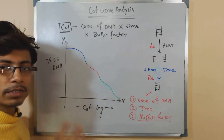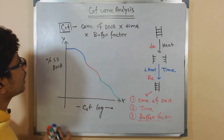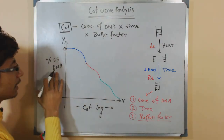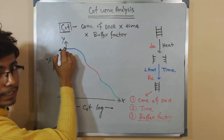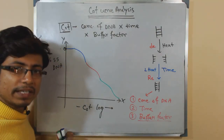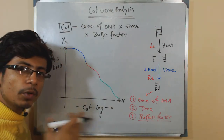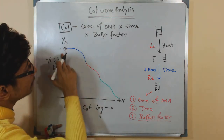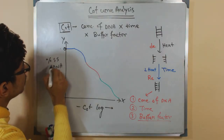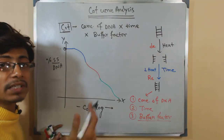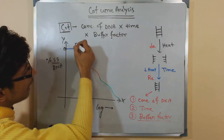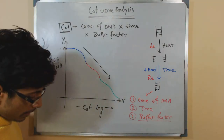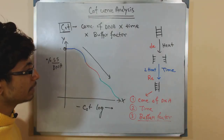All of the DNA starts from a point where it is completely single-stranded, so the percentage of single-stranded DNA is very high. As we go on with time, those single-stranded DNAs start to re-anneal with each other — the percentage of single-stranded DNA falls while the percentage of double-stranded DNA increases. So the value falls through the line.